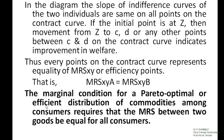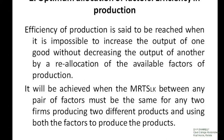Thus, the marginal condition for a Pareto optimal or efficient distribution of commodities among consumers requires that the marginal rate of substitution between the goods be equal for all consumers. Now we can discuss the second marginal condition, that is, optimum allocation of factors, which implies efficiency in production.